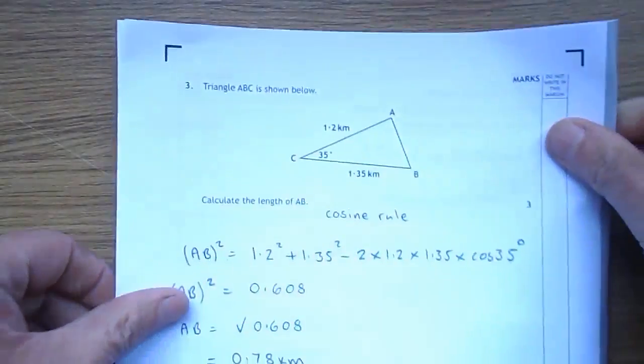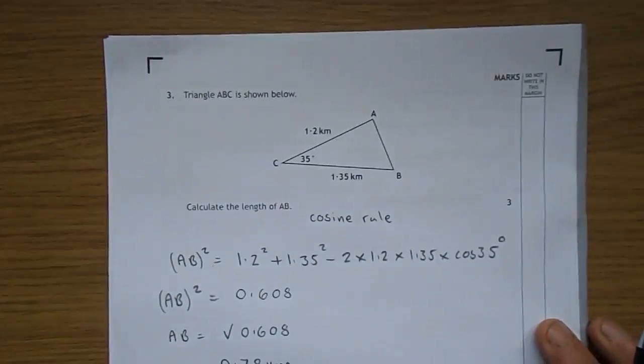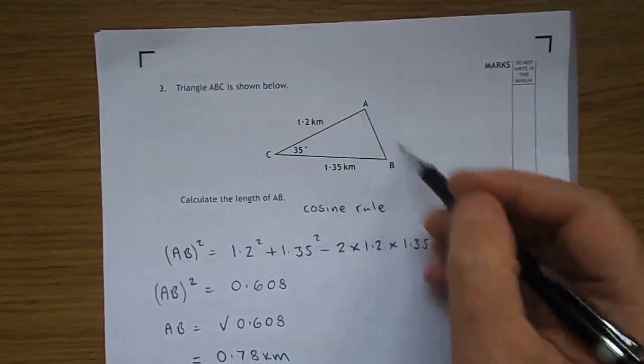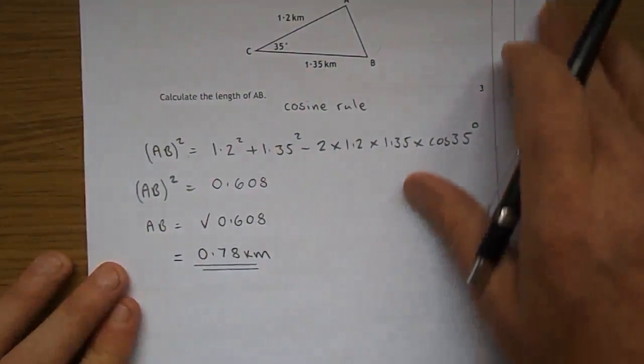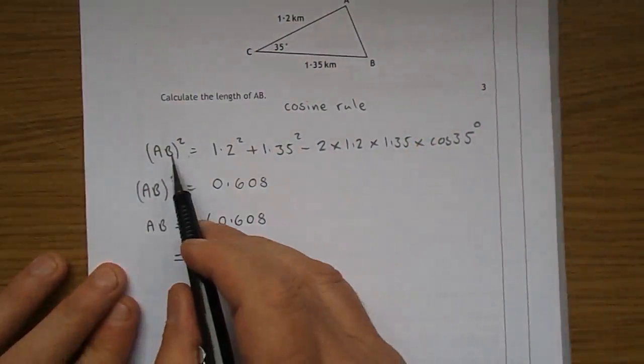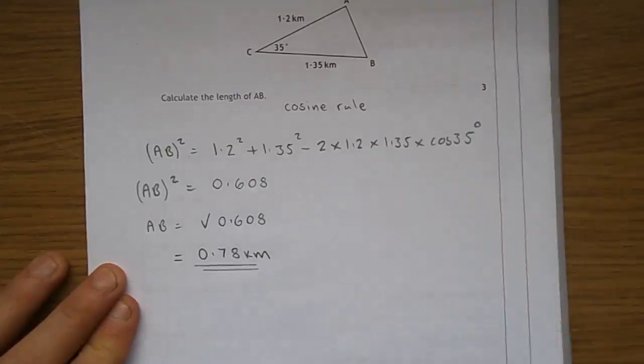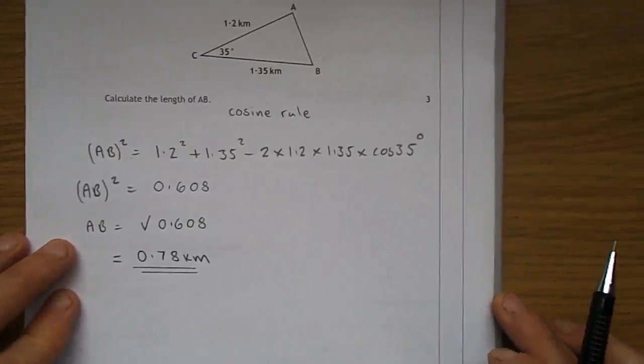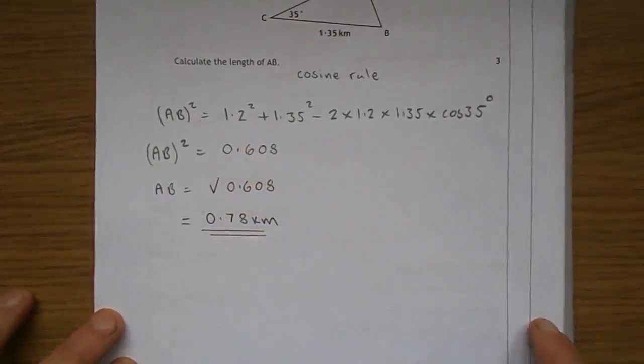Question 3, to be honest, a very, very straightforward cosine rule question. Two sides, angle in between, and they want the length of b. So, cosine rule, you look it up in the formula list if you can remember. b squared is 1.2 squared plus 1.35 squared, minus 2 times 1.2 times 1.35 times cos the angle in between, 35. Plug that all in your calculator, and out pops 0.608.